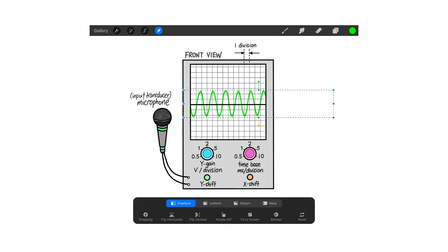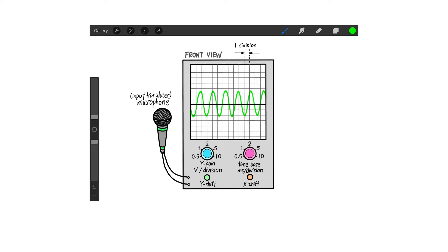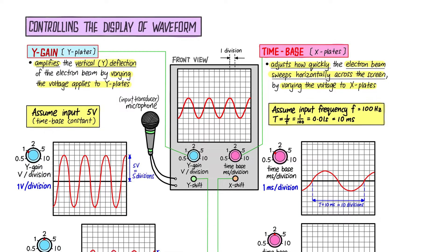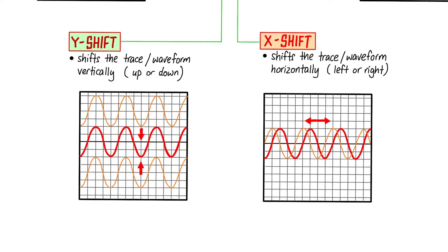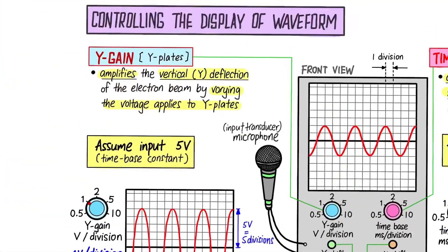We will focus on the four controls: Y gain, time base, Y shift, and X shift. Let's start with Y shift and X shift as they are the easiest. If the original waveform is too high up and you want to shift it down, just adjust the Y shift. You can also shift it up from below to the position you want. For the X shift, you can shift the waveform left and right.